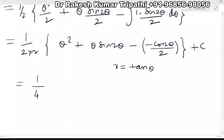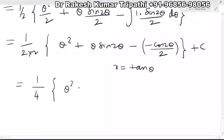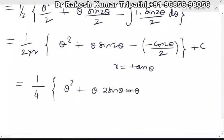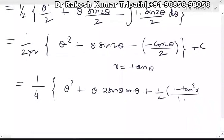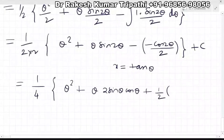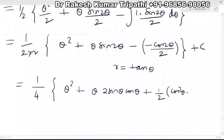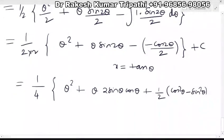There is a factor of 1/4 outside. For θ², that is not a problem because θ is tan⁻¹x. For θ sin 2θ, we can write sin 2θ as 2 sin θ cos θ, and the minus into minus will be plus with the 1/2 factor. For cos 2θ, you can write it as (1 − tan²x)/(1 + tan²x), or equivalently as cos²θ − sin²θ.